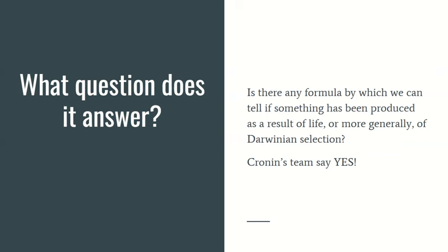What question does it answer? He's asking how can we tell if something's been made? Is there a formula to tell us if something's been produced as a result of life or more generally if we're going to take into account prebiotic evolution as a result of some kind of Darwinian selection? And his team say yes there is.